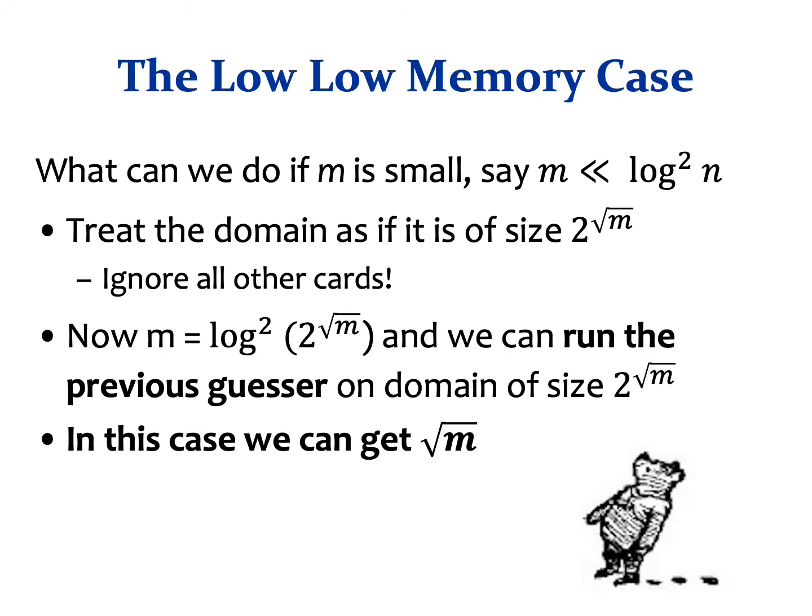But what happens if m is even smaller — say, much smaller than log squared n? In this case, we can treat the domain as if it is of size 2 to the square root of m, and simply ignore all other cards. Now m equals log squared of 2 to the square root of m, and we can run the previous guessers on the smaller domain to get square root of m correct guesses in expectation.